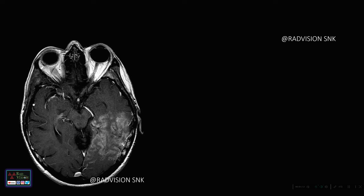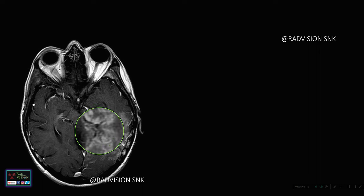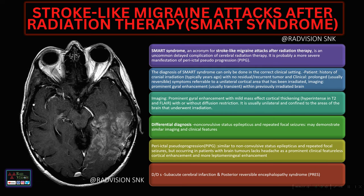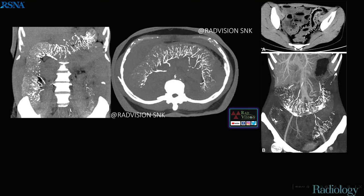Next case: a known case of brain tumor that was previously irradiated, now presenting with seizures. There is diffuse subcortical gyral enhancement in the right temporal lobe. Whenever there is a history of primary brain tumor with previous irradiation, presenting with prominent gyral enhancement and mass effect as cortical thickening, definitely suspect stroke-like migraine attacks after radiation therapy — called SMART syndrome. There will typically be a history of cranial irradiation with no residual or recurrent tumor, and prolonged symptoms referable to a unilateral cortical area. Differentials include non-convulsive status epilepticus, repeated focal seizures, subacute cerebral infarction, and posterior reversible encephalopathy syndrome.